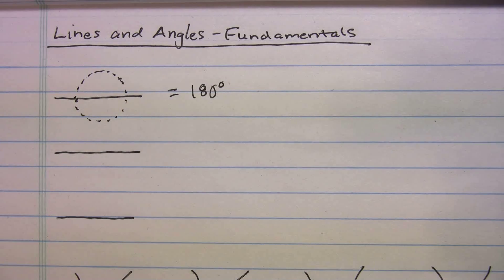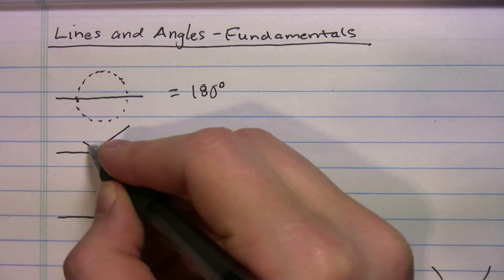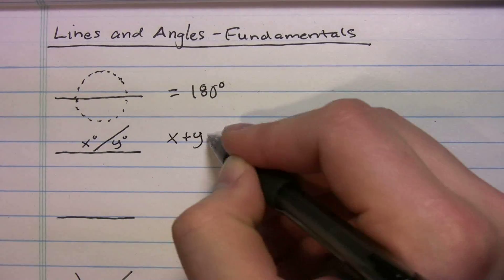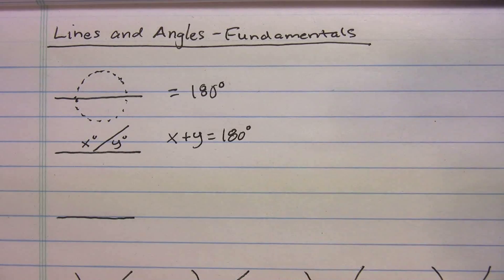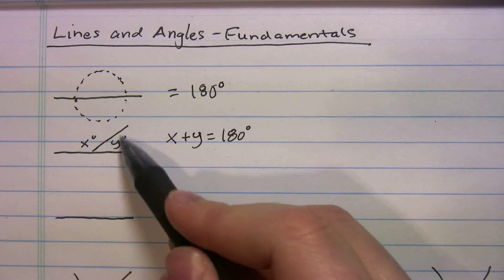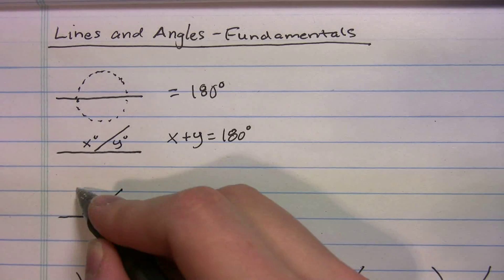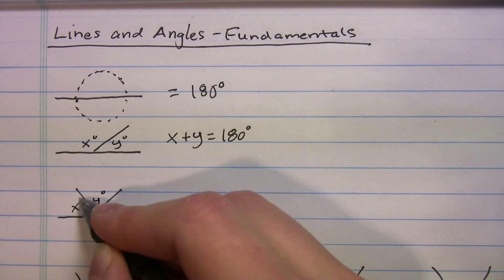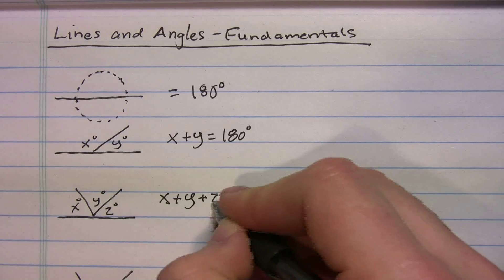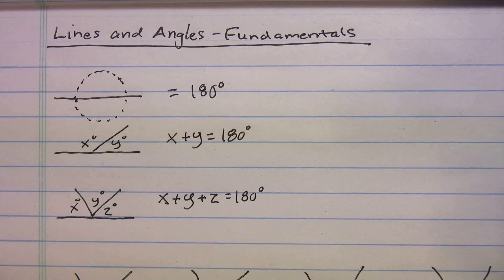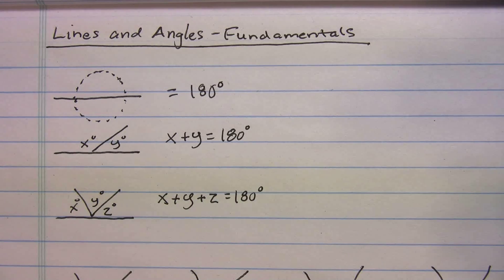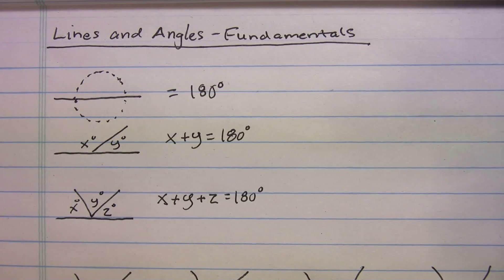If I have a line and I split it up into x and y, x plus y equals 180. It doesn't matter how many times you split that line — all those angles have to equal 180. So if I split it into x, y, and z, then x plus y plus z still equals 180 degrees. I could split it into 40 angles and they all have to equal 180.